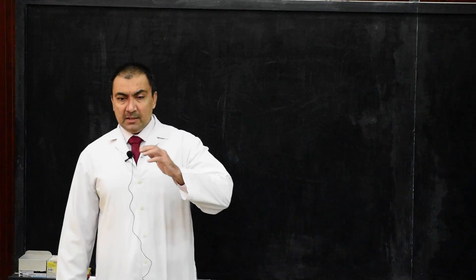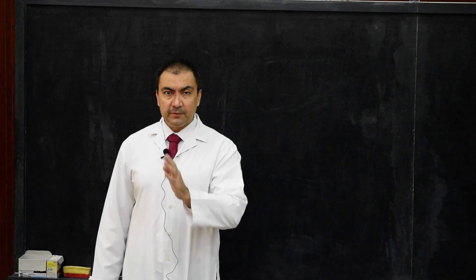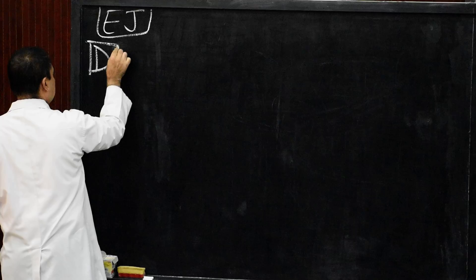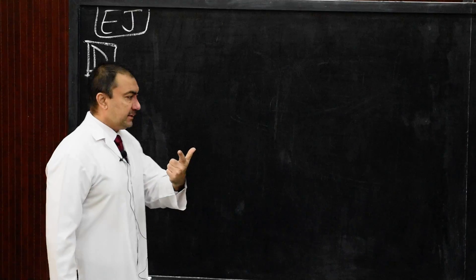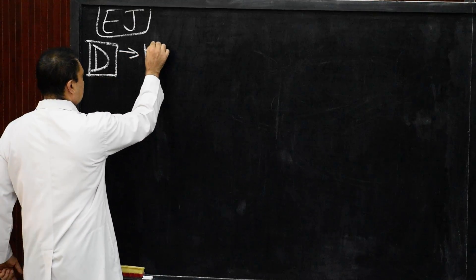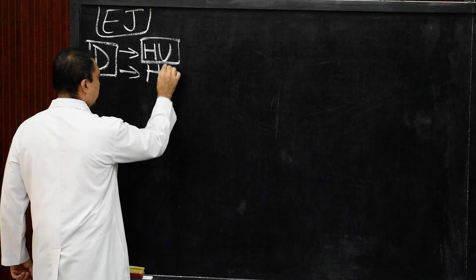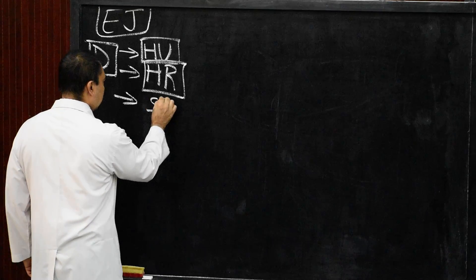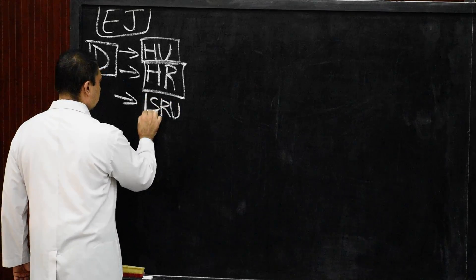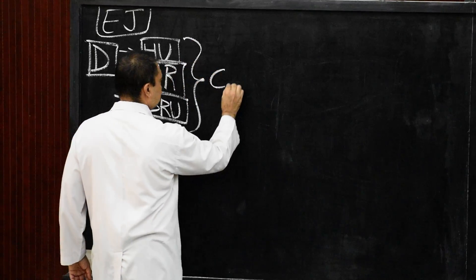Good morning students. Here we come up with the elbow joint definition, articulating surfaces, fibrous capsule and synovial membrane. This joint is comprising of three anatomical structures: the humero-ulnar joint between humerus and ulna, the humero-radial joint between humerus and radius, and the superior radio-ulnar joint. These three joints together are called cubital articulations.